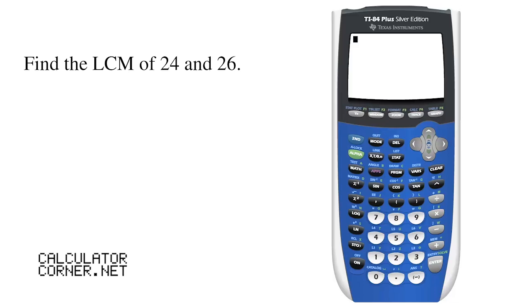To find the least common multiple, go to math, tab over to the right to num for numbers, and then go down to number eight, LCM.